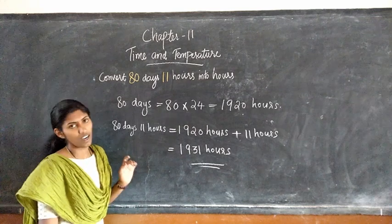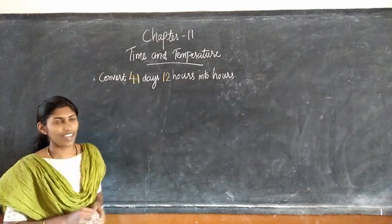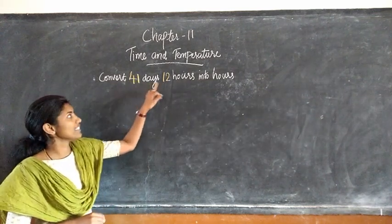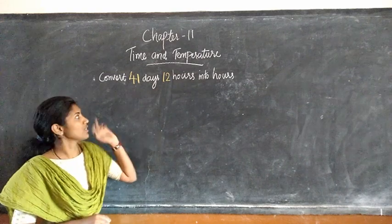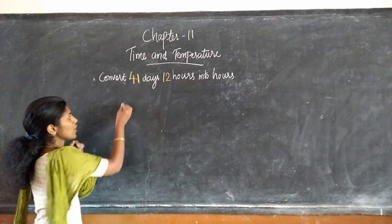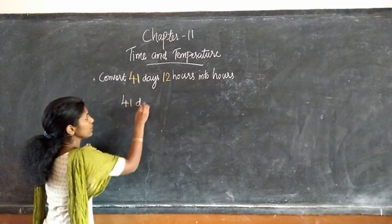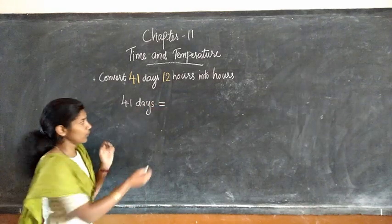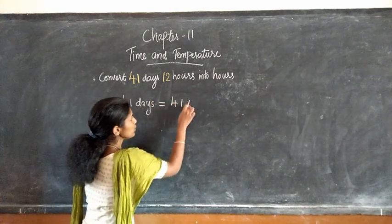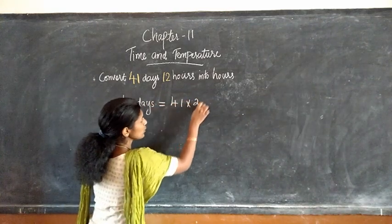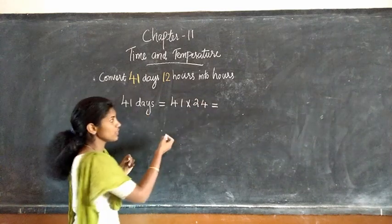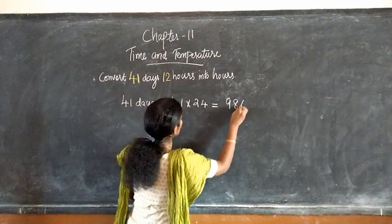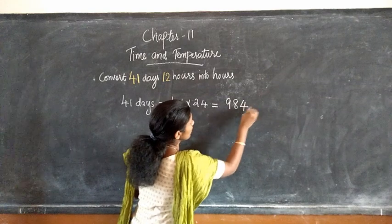Once again, we have to convert 80 days 11 hours into hours. First, we convert 80 days into hours, that is 1920 hours. So 80 days 11 hours equal to 1920 hours plus 11, that is equal to 1931 hours.